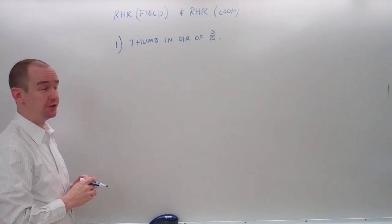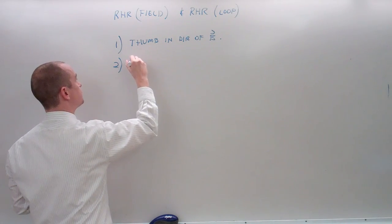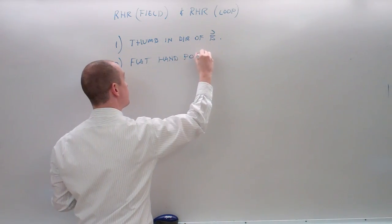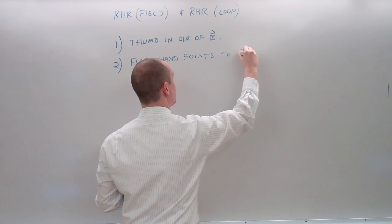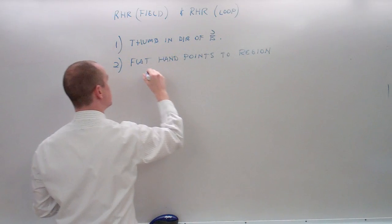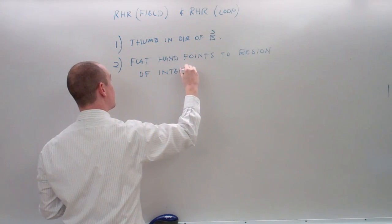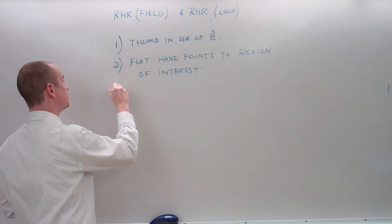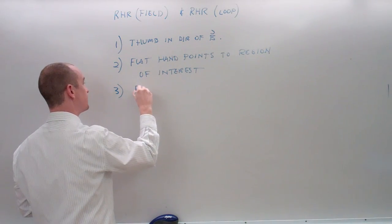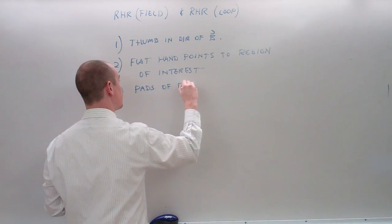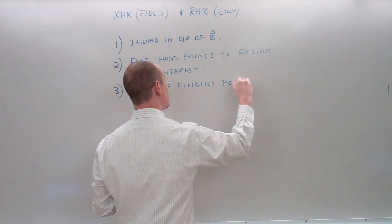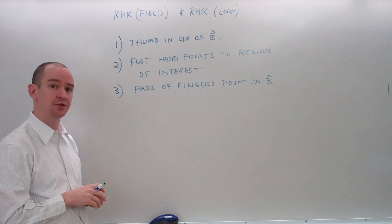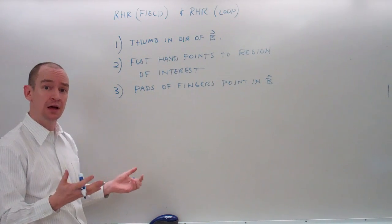First, your thumb needs to point in the direction of the current. Next, your flat hand points to the region of interest. Finally, the pads of your fingers point in the direction of B. Let's take a look at this.